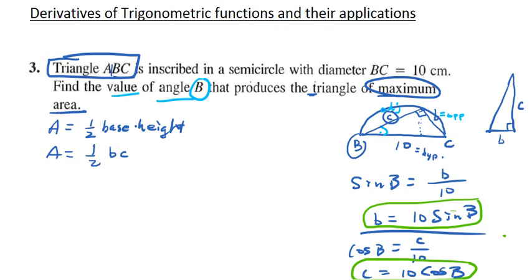Because now the area equals one-half, where B is 10 sine B and C is 10 cosine B.